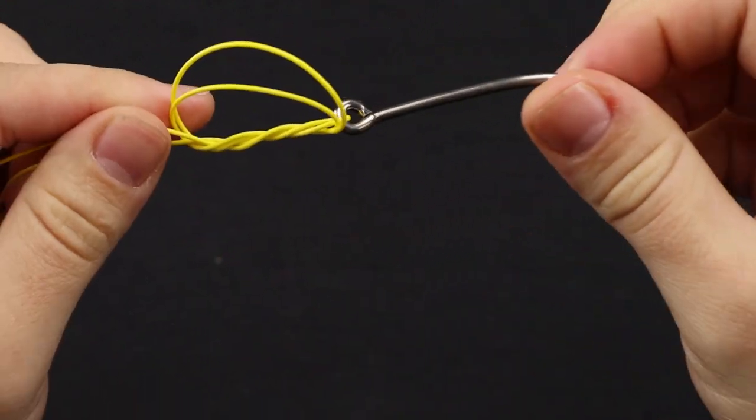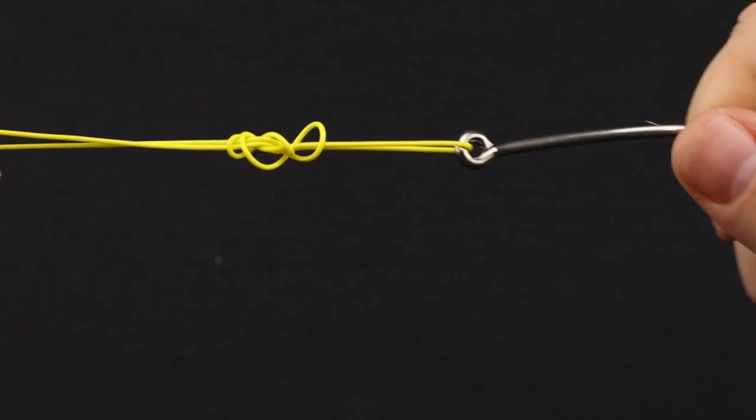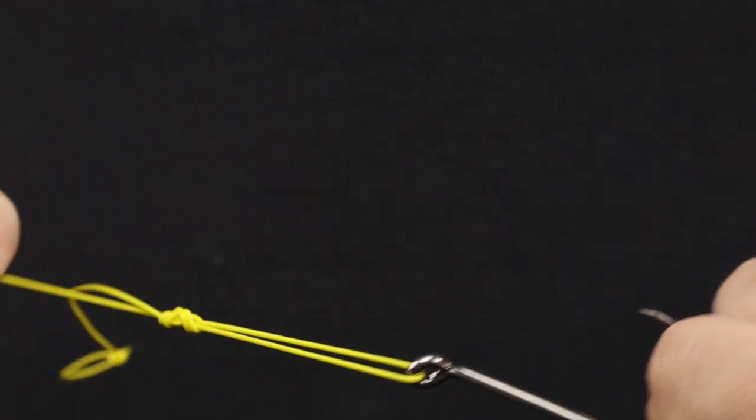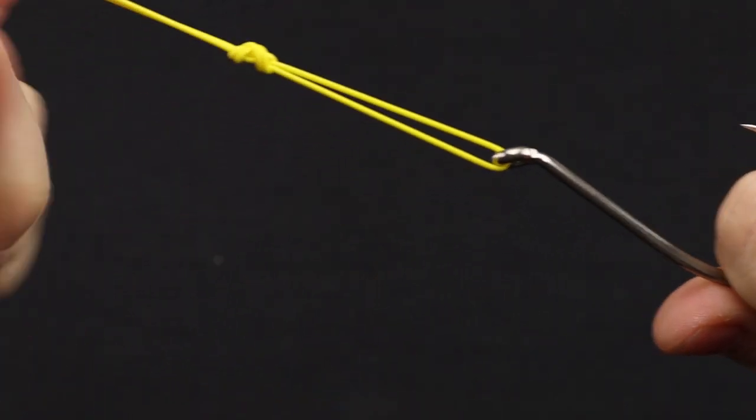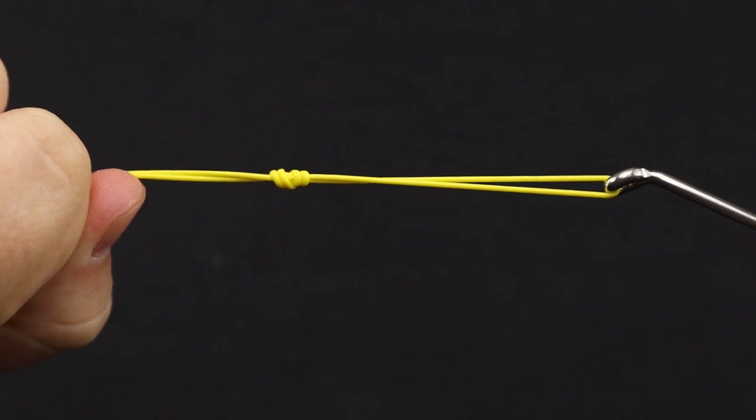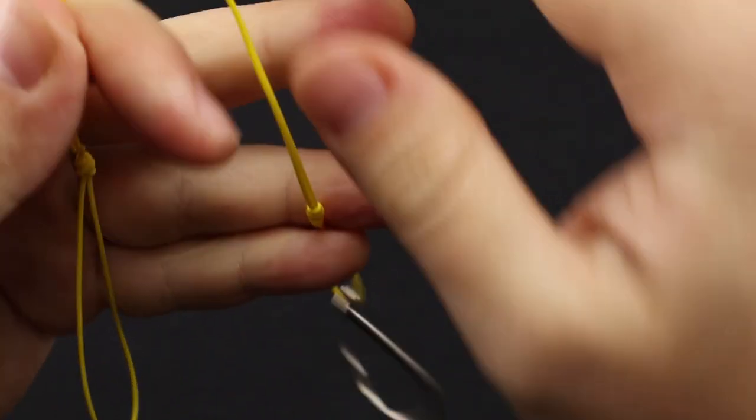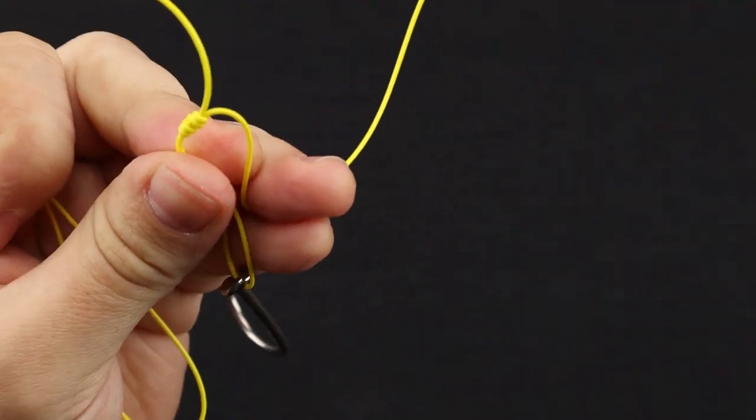Okay, and then go ahead and start pulling that knot snug, just like before. You'll have that same tag end to cut off here.